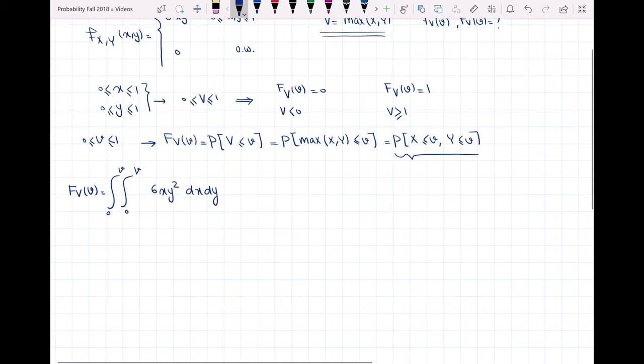Why are the limits between 0 and v? We want X and Y less than or equal to v, and we know that both X and Y are greater than or equal to 0.